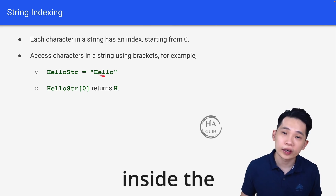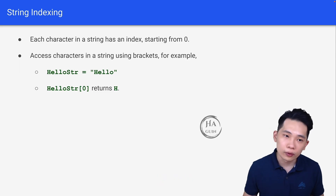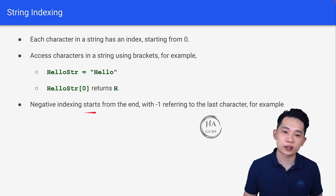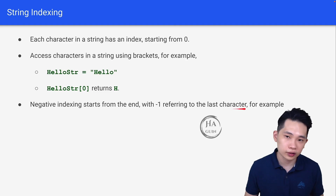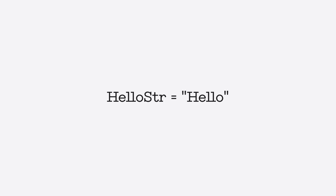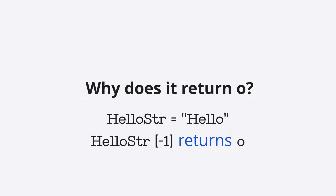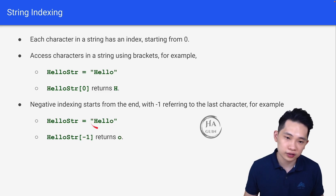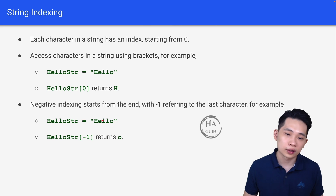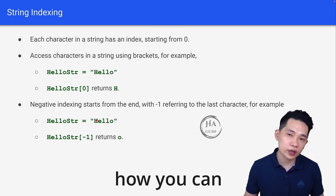Furthermore, negative indexing starts from the end, with negative one referring to the last character. For example, hello_string[-1] returns 'o', because 'o' is the last character in "Hello". The negative indices go negative one, negative two, negative three, negative four, negative five from the end.